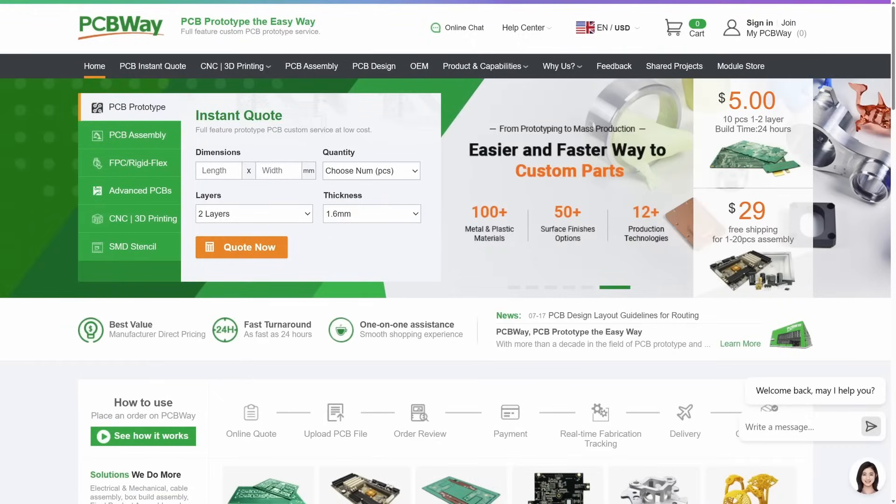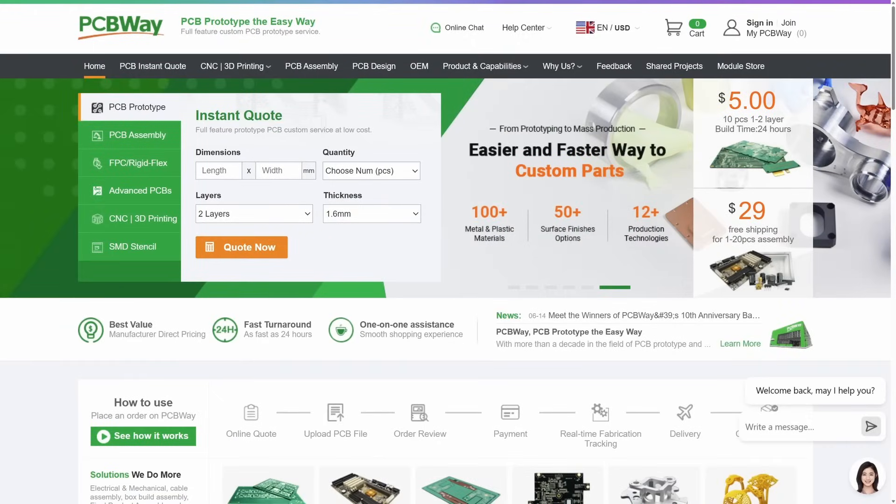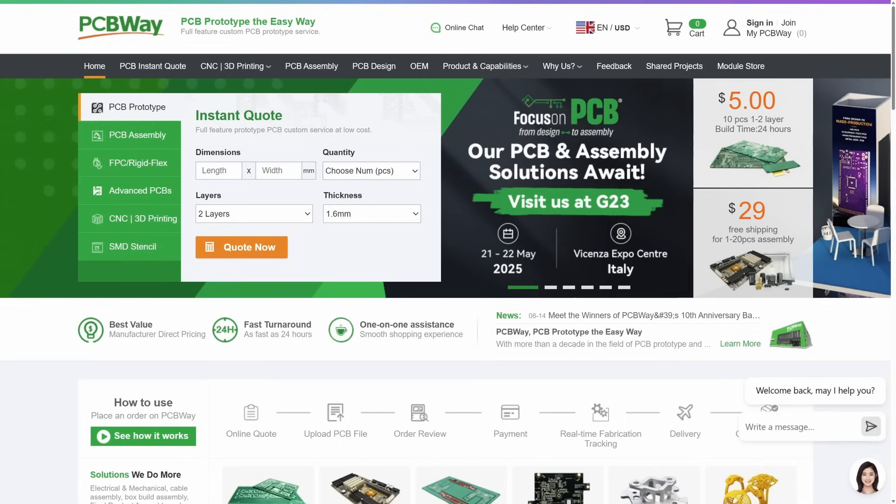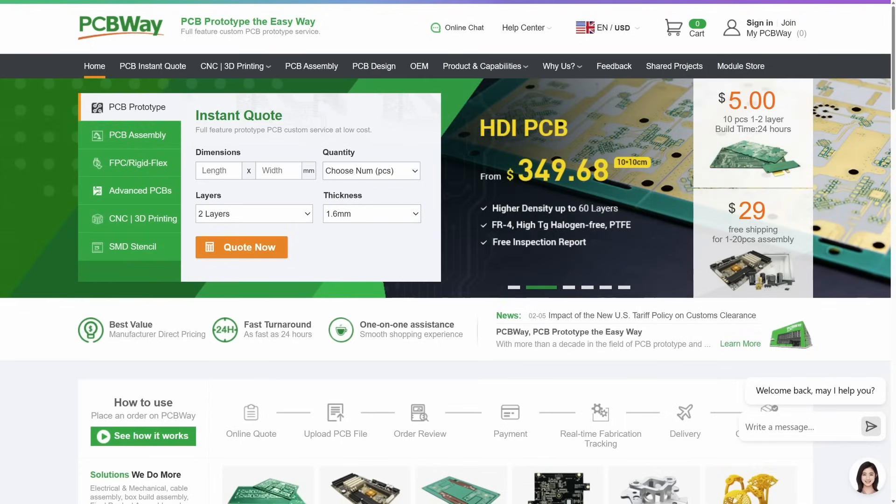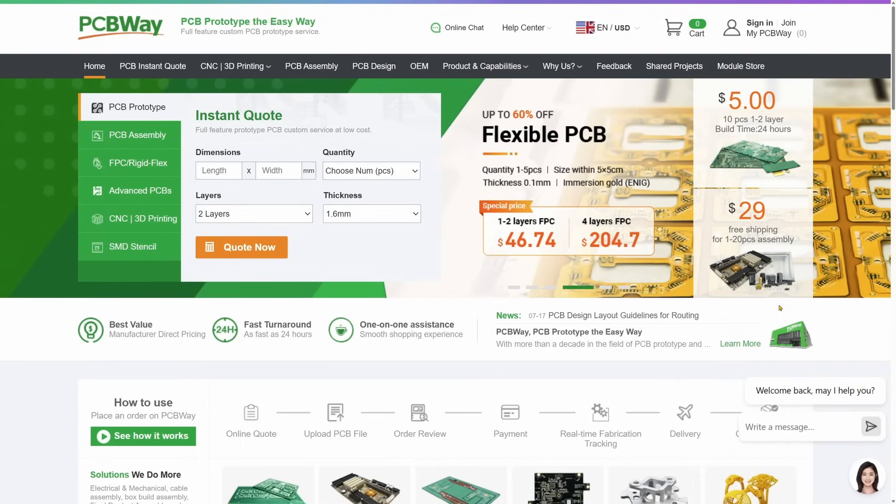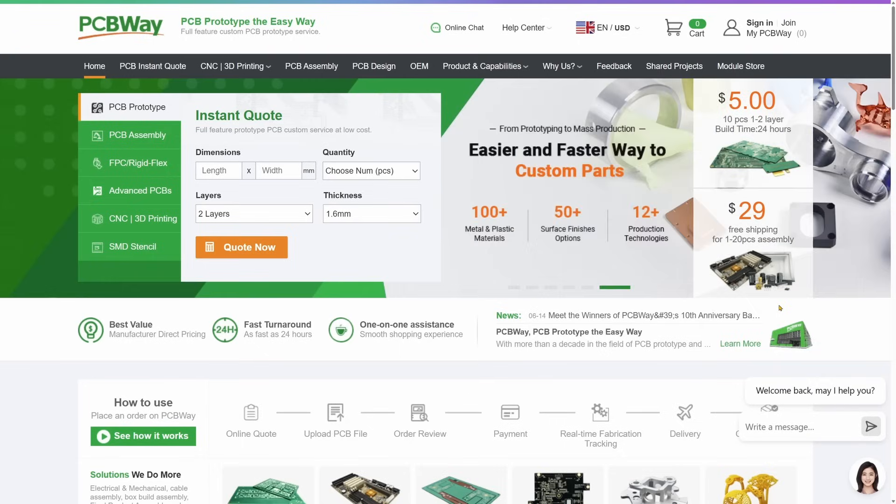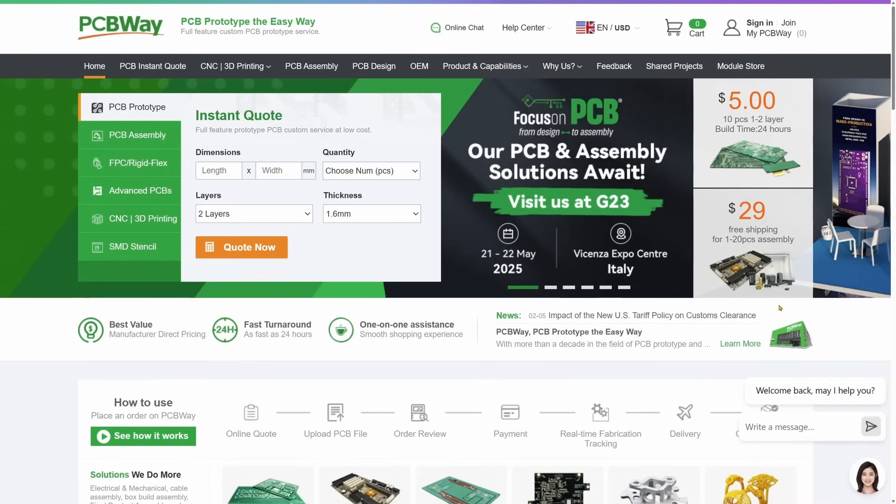So before we continue, a big thanks to PCBWay for sponsoring this video. They offer PCB manufacturing and assembly services with quick turnaround and competitive prices. You can upload your Gerber files directly, choose your board specification and get an instant quote. Don't get hung up on choosing the colour of your PCB, there are many options to choose from. They support a wide range of options including multi-layer boards, flexible PCBs and assembly for both surface mount and through-hole components.